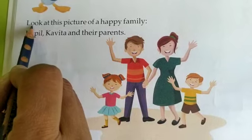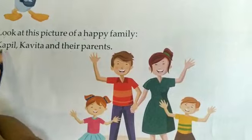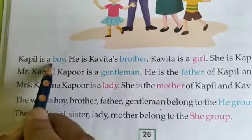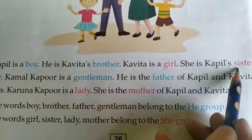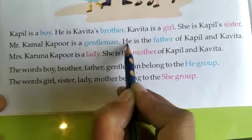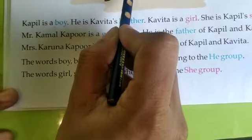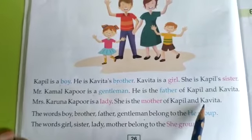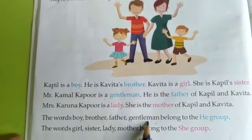Let us read a few examples from your book. Look at this picture of a happy family: Kapil, Kavita, and their parents. Kapil is a boy. He is Kavita's brother. Kavita is a girl. She is Kapil's sister. Mr. Kamal Kapoor is a gentleman. He is the father of Kapil and Kavita. Mrs. Karuna Kapoor is a lady. She is the mother of Kapil and Kavita. So the words boy, brother, father, gentleman belong to the he group.